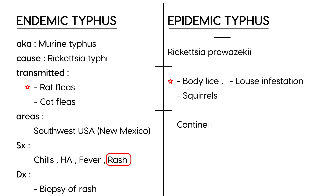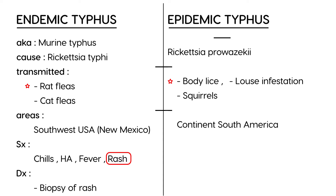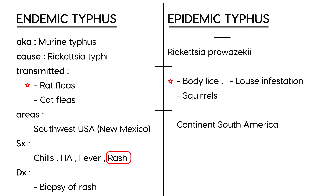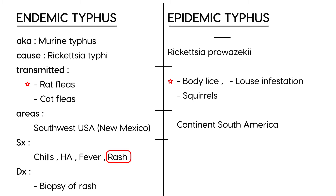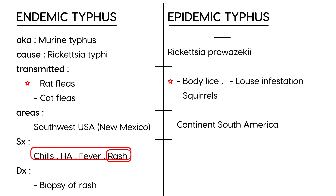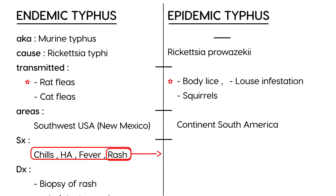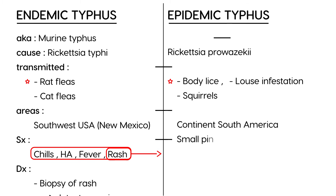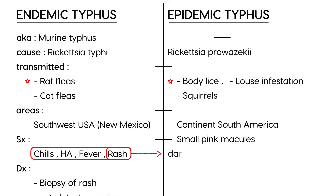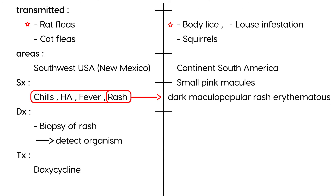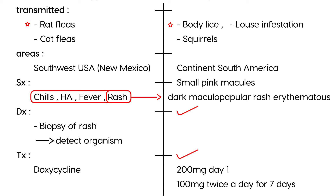In terms of geographic areas, the continent of South America is often mentioned — notice not the southern part of the United States, but the continent of South America. Symptoms are identical to endemic typhus. The rash is also a helpful physical exam finding: initially small pink macules that can progress to a darker maculopapular erythematous rash. Diagnosis involves the same tests, and treatment is also the same — doxycycline 200 mg on the first day, then 100 mg twice a day for seven days.